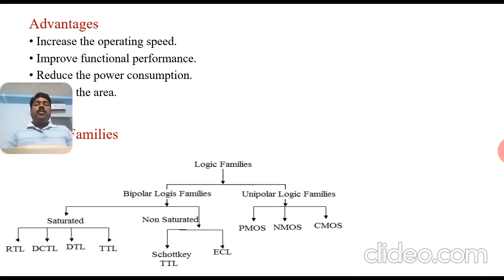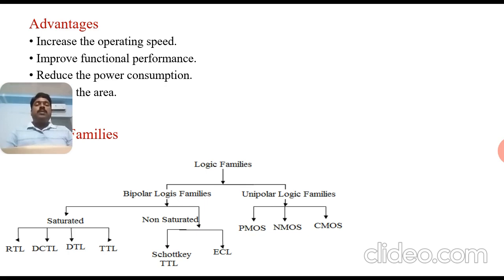Bipolar logic families are again classified into two types: saturated and non-saturated. In saturated logic, the transistor in the device is completely in saturation mode before we expect the response. Such circuits are RTL (Resistor Transistor Logic), DCTL (Direct Coupled Transistor Logic), DTL (Diode Transistor Logic), and TTL (Transistor Transistor Logic).